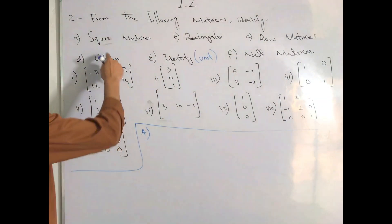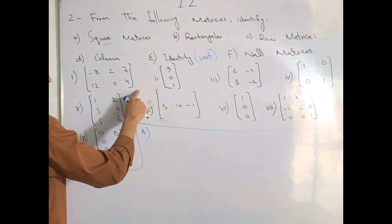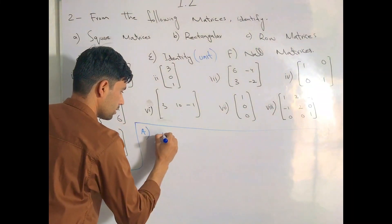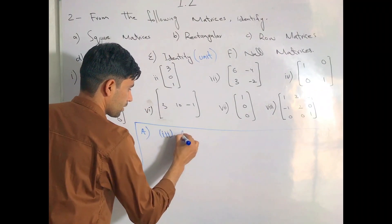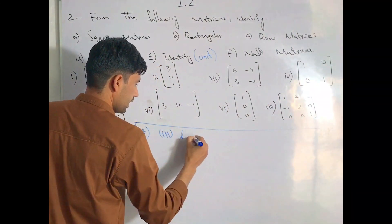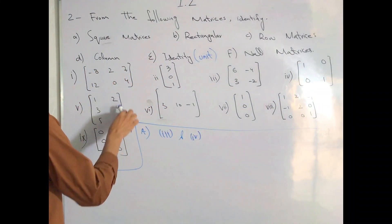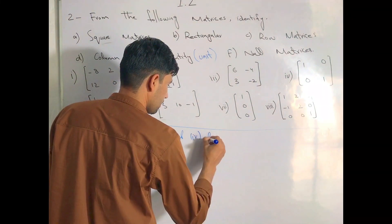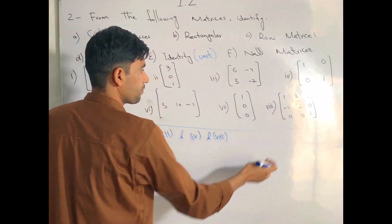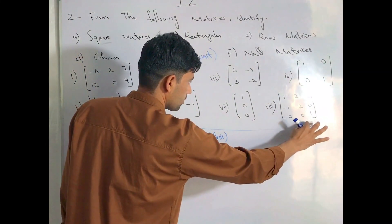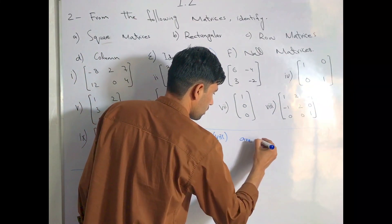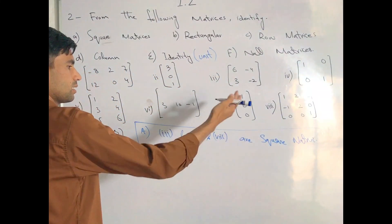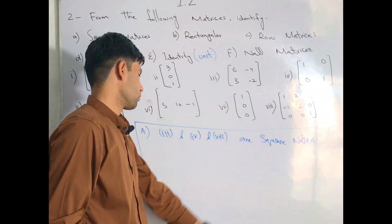Now we can see the square matrix. If the number of rows and columns are equal, it is a square matrix. For example, 3 rows and 3 columns — the number of rows and columns are equal, so this is a square matrix.